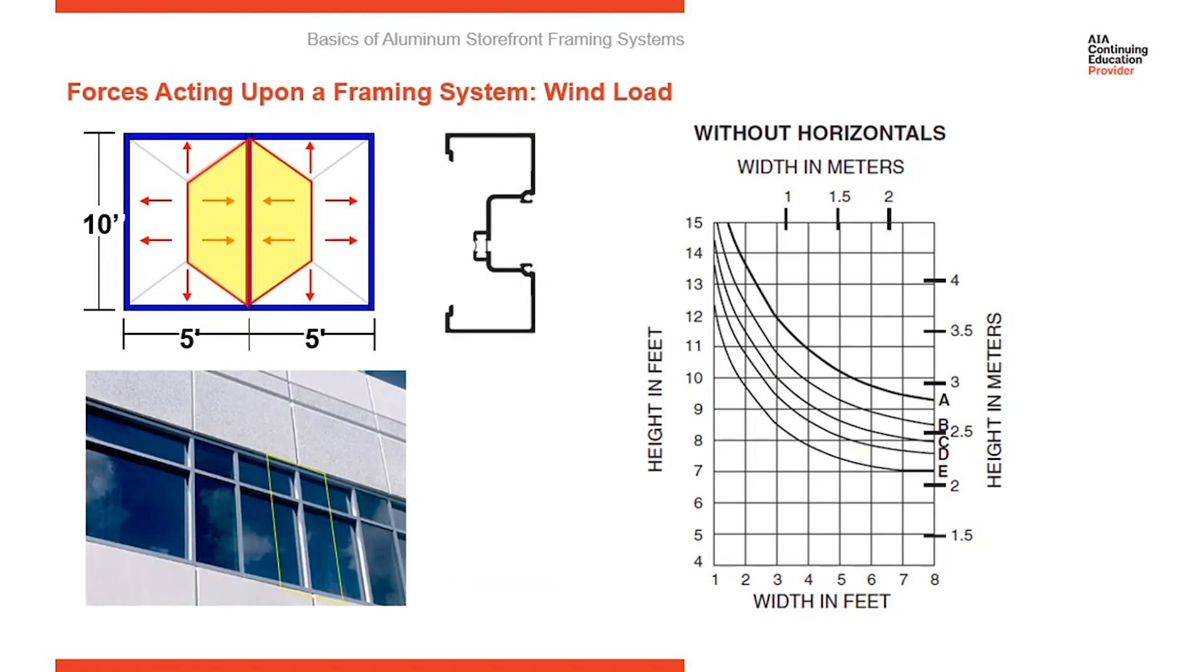Now, every manufacturer you're working with is going to have wind load charts very similar to this. And what you're going to do is take the tributary area of your elevation and apply it to this wind load chart. So you can see our tributary area is 5 by 10. So we're going to start with width across the bottom, which is 5 feet, and height, which is 10 feet. And where those two lines meet, it needs to be underneath the curved line that represents your wind load. So you can see there's a couple of curved lines here, and those are labeled A, B, C, D, E.